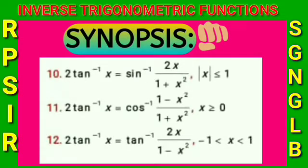Tenth point: 2tan⁻¹(x) = sin⁻¹(2x/(1+x²)), where |x| ≤ 1. Eleventh point: 2tan⁻¹(x) = cos⁻¹((1-x²)/(1+x²)), where x ≥ 0.